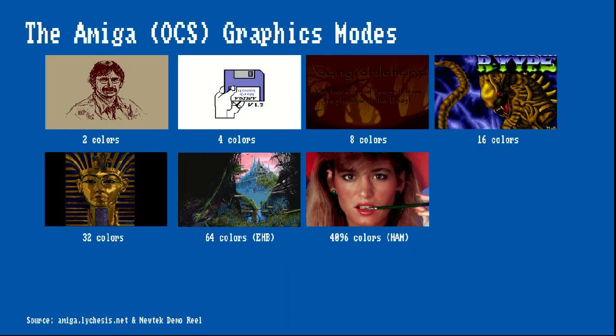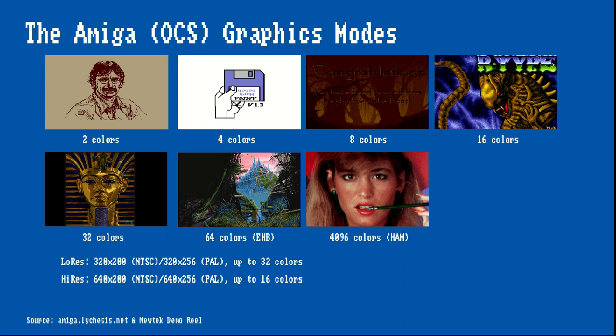The Amiga supports a number of display modes. Please note that I am only listing the OCS graphics modes — the ECS and later the AGA chipset introduce additional modes. The standard graphics modes can support up to 32 colors with a screen resolution of 320x200 for NTSC or 320x256 for PAL. There is also a high resolution mode with 640x200 for NTSC and 640x256 for PAL, and both high res and low res modes have an interlaced variant which doubles the vertical resolution to 400 or 512 pixels at the cost of effectively halving the vertical refresh rate — 50Hz down to 25Hz for PAL and 60Hz down to 30Hz for NTSC.